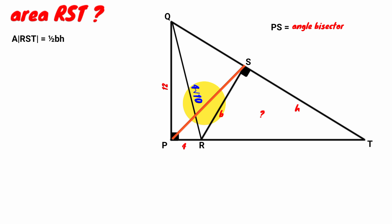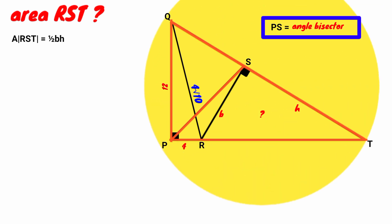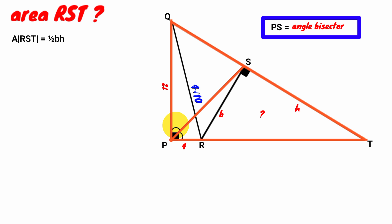Recall that line PS is an angle bisector of this triangle — it bisects angle QPT, which is a right angle. Therefore each of the two resulting angles is half of 90°, which is 45°.